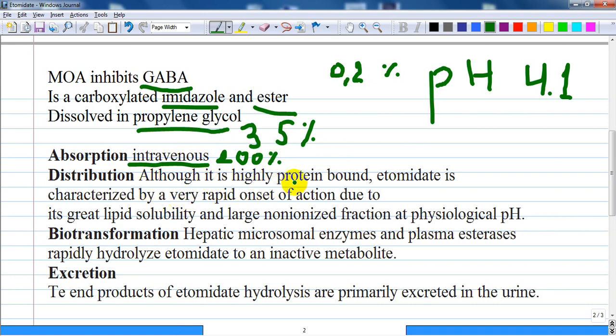Distribution: it is highly protein bound, around 75%. Etomidate is characterized by a very rapid onset of action and reaching the brain tissue due to the great lipid solubility and large non-ionized fraction at physiological pH.